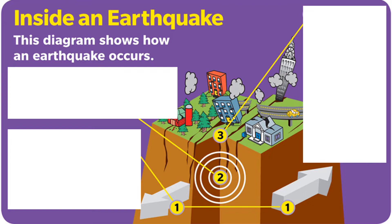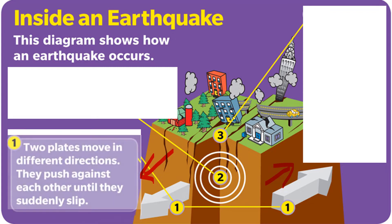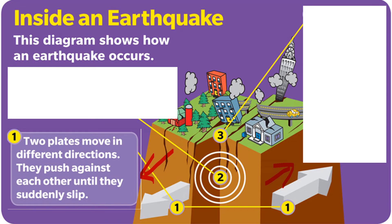As you can see in this diagram, one part of the earth is moving on this side and one part is moving on the other side — they are moving in opposite directions. Both plates, or two or more plates, move in different directions or the same direction depending on the type of earthquake. They push against each other until they cause a sudden slip.